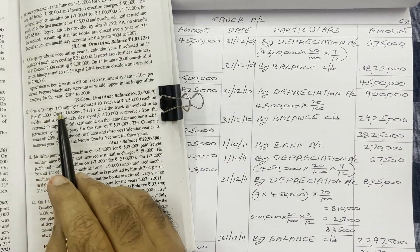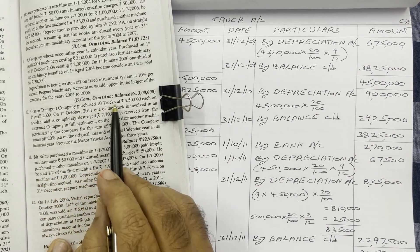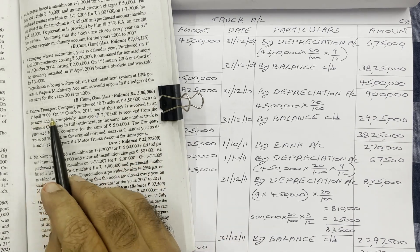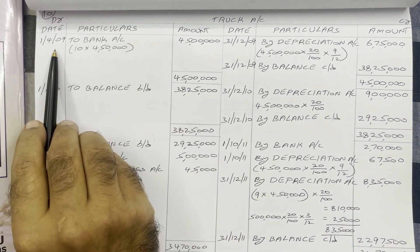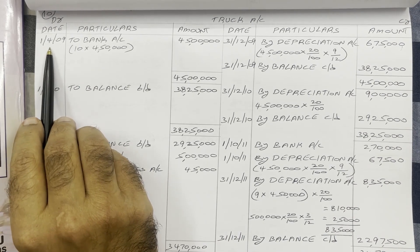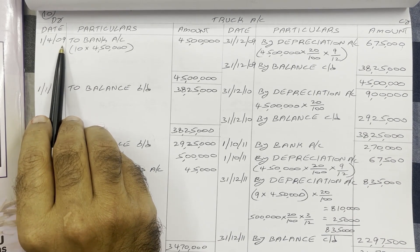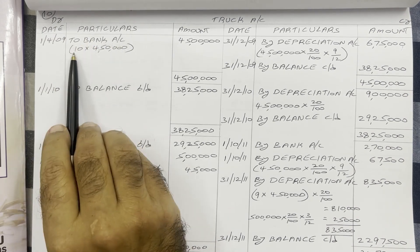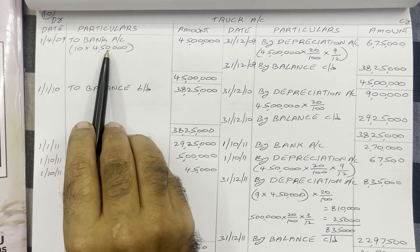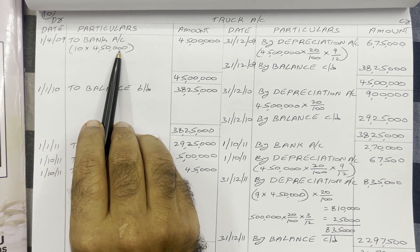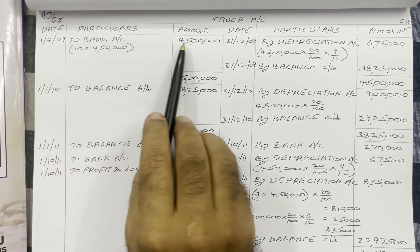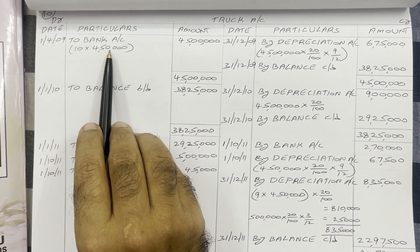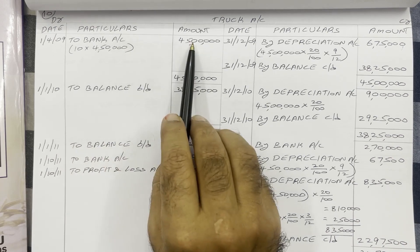First, what happened? Orange Transport Company purchased 10 trucks at Rs 4,50,000 each on 1st April 2009. So when we buy the asset, on 1st April 2009 they purchased. Write down that date. For purchases, you have to write 'To Bank account'. 10 trucks are purchased; one truck price is Rs 4,50,000. So for 10 trucks, the amount in the amount column is 10 trucks × Rs 4,50,000 each = Rs 45,00,000.